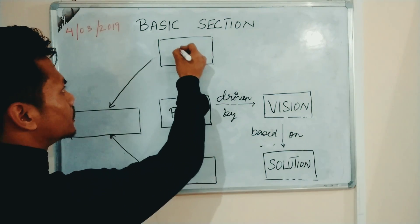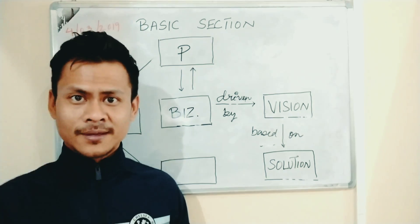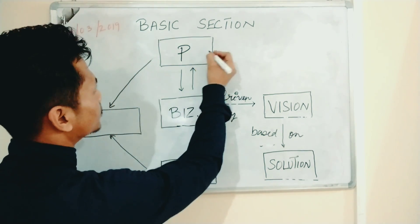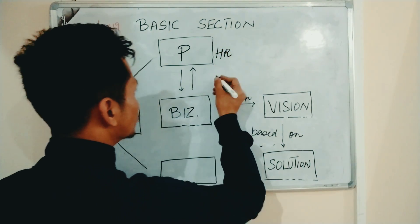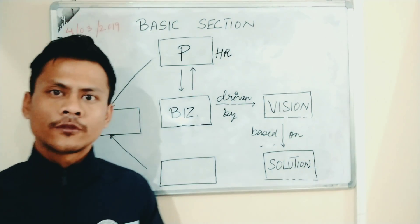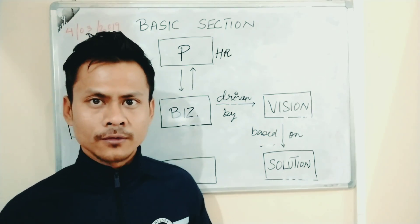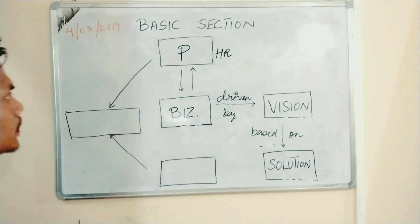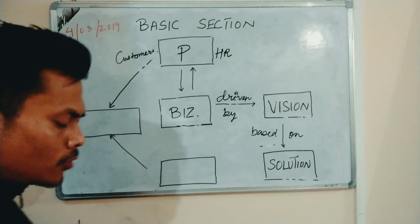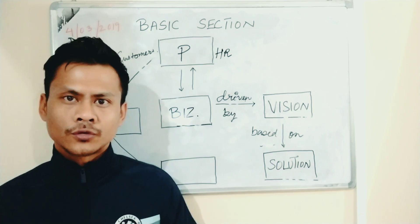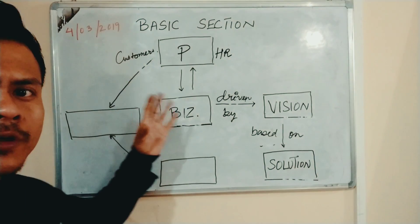So the next thing is P. Anyone want to guess what P is? Well, maybe you guessed it right. It's people. In business, there are two types of people. One is your human resource within the business, people who are working with you, who help you start your business, your salesmen who bring in the revenue. The other type are your customers. It's very important to know the importance of human resources and how to build and maintain relationships with both categories of people.